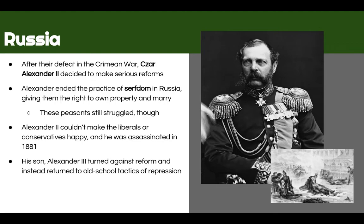In Russia, after going home defeated from the Crimean War, they had to make serious reforms. The biggest reforms were made under Tsar Alexander II. He ended serfdom in Russia and gave serfs the right to own property and to marry, but peasants still struggled. Alexander II couldn't make the liberals or the conservatives happy, and ultimately he was assassinated by an anarchist in 1881. His son then turned against reform and moved back toward the old repressive Russia of the past.